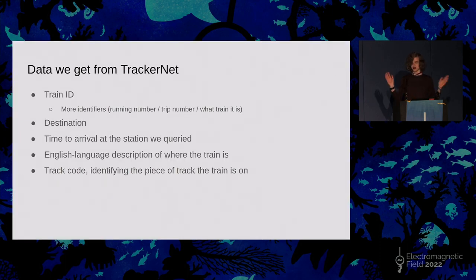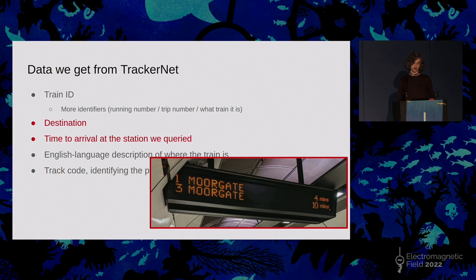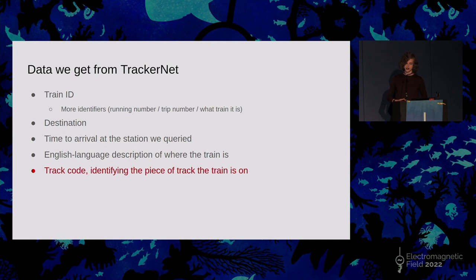You give it a three-letter code representing the station you want, along with the tube line you're interested in. These are given in tables inside the massive PDF, which you have to copy out yourself. So you put together this URL, and you hit it with your HTTP client of choice, and you get a page of XML. The XML has this massive text disclaimer about how you shouldn't use this to make safety-critical decisions. So if you work for the underground, you shouldn't use TrackerNet to tell you whether the line is clear. And you get some metadata and train information. The really interesting parts are these individual little train elements, which you get describing all the trains near the station. I won't make you read XML. This is the sort of plain English overview of the data you get from TrackerNet. Train identifiers, destination, time to arrival, an English language description of where the train is, and a track code.